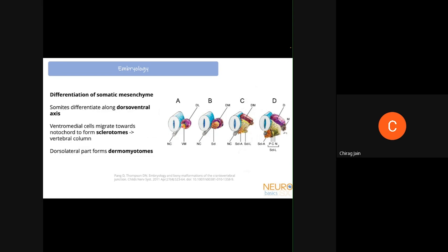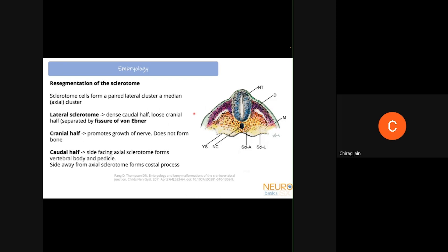Cells located more laterally and dorsally form the dermomyotome, giving rise to skin and muscle structures, while sclerotomes give rise to bone structures. The sclerotome further divides: cells around the notochord form the axial sclerotome — a single median axial cluster — and there are two paired lateral clusters located laterally, called the lateral sclerotome. Both the lateral and axial sclerotome divide into a dense caudal half and a loose cranial half, separated by the fissure of von Ebner.